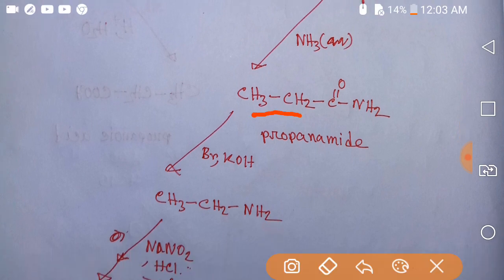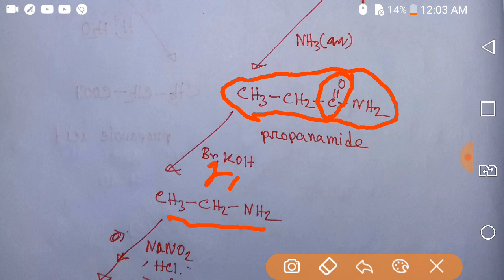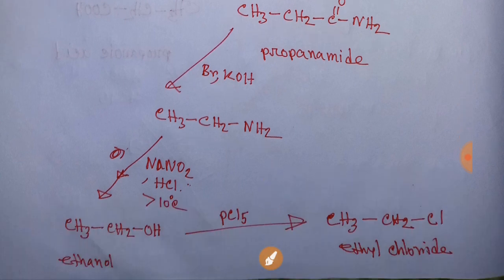If you add bromine and potassium hydroxide (Br2/KOH) to propanamide, then the carbonyl group will be removed — this is the Hofmann degradation — and you will get ethylamine.